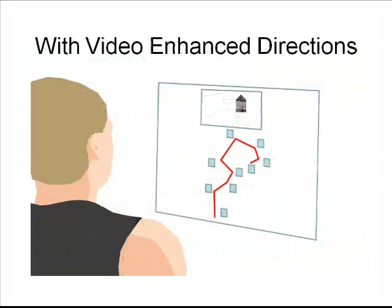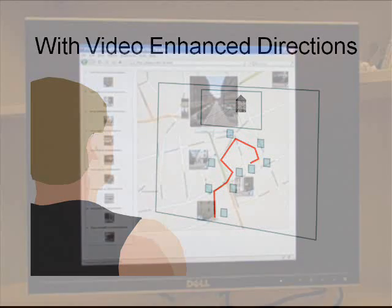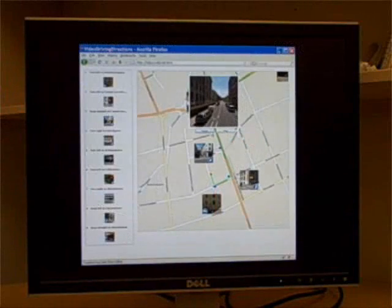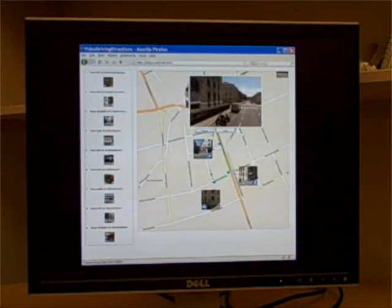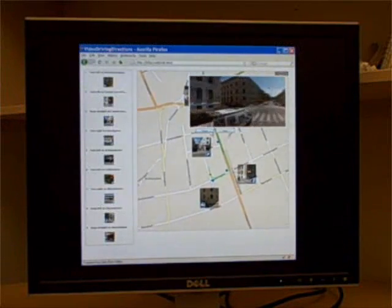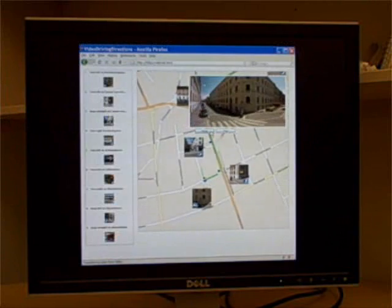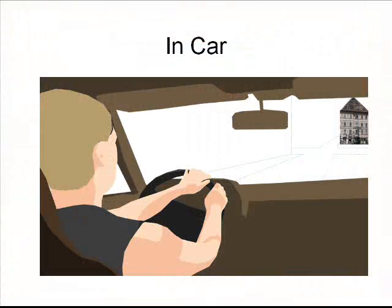Given the wealth of visual information that has been gathered by driving along roads, we can now construct and deliver a video representation of the route along with the map and directions. After viewing the time-compressed and enhanced video, it is as if you had already driven the route once. Approaching an intersection, the driver's visual memory now kicks in to alert him that this is the intersection to turn right.